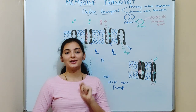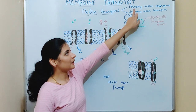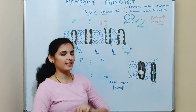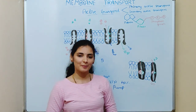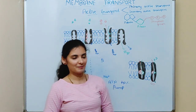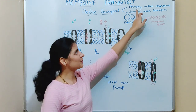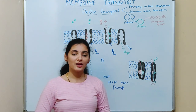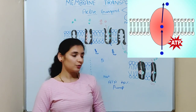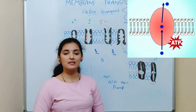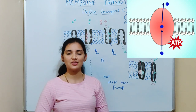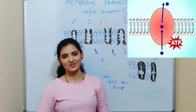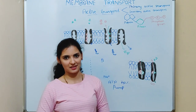There are mainly two types of active transport: primary active transport and secondary active transport. In primary active transport, ATP is used as a direct source of energy for the transport of molecules against the concentration gradient.